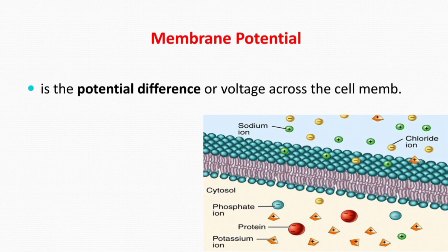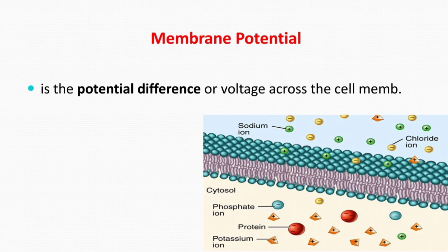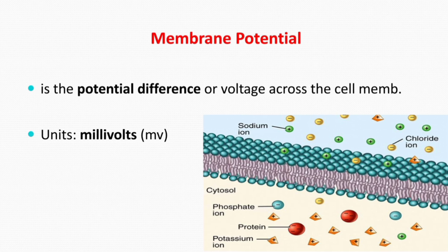Membrane potential, as the name indicates, is the potential or charge or voltage on the membrane. This is a semipermeable cell membrane, or nerve fiber membrane, and across this membrane various ions are present. The unequal distribution of ions — sodium ions are more on the outside in the extracellular fluid, while potassium ions and various anions are more on the inside — creates a charge or voltage or potential difference on this cell membrane.